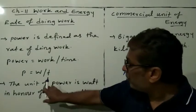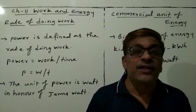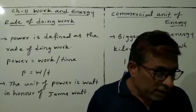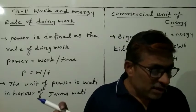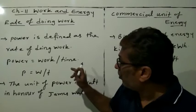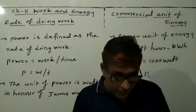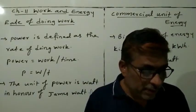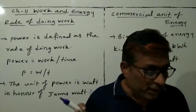The unit of power is the watt, in honor of James Watt. One watt is the power of an agent which does work at the rate of one joule per second. So, one watt equals one joule per second. Power is one watt when the rate of consumption of energy is one joule per second.